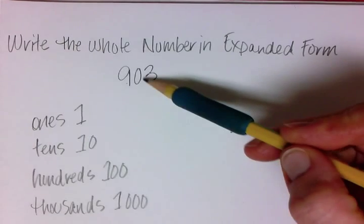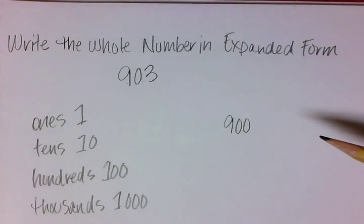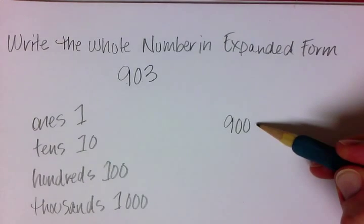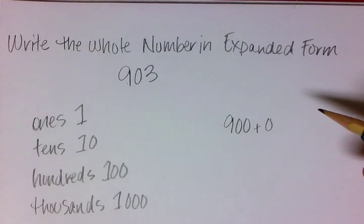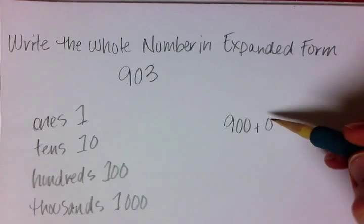In the tens place, we just have a zero. So we don't really have a tens place, so we don't really have to add anything. We could say plus a zero, but we don't really have to. Just like in any math equation, we can just take out that plus a zero.